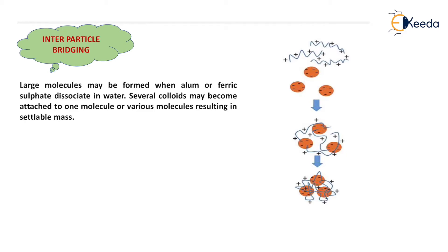The fourth mechanism is inter-particle bridging. Large molecules may be formed when alum or ferric sulfate dissociate in water. Several colloids may become attached to one molecule or various molecules, resulting in a settleable mass. When positive charge is added in water, some negative charge will come in contact with the positive and it will form that type of molecule. When this type of molecule forms, charge neutralization takes place. Due to the neutralization of the charge, colloids come in contact with each other and grow in size, resulting in settleable mass. That is inter-particle bridging, the fourth mechanism of coagulation.